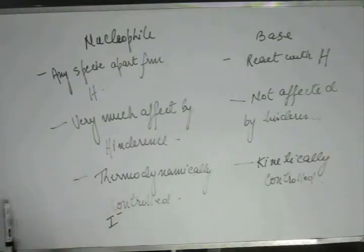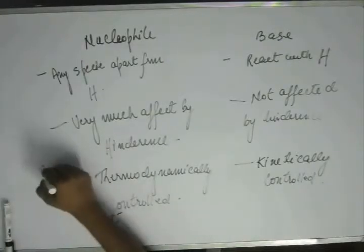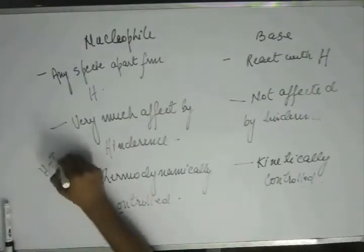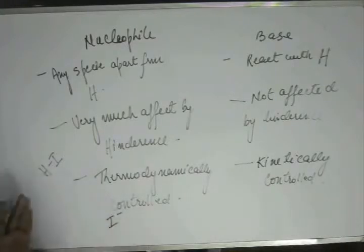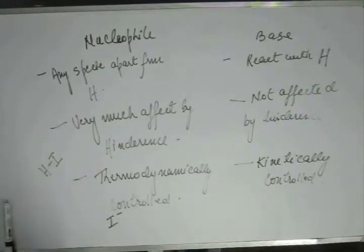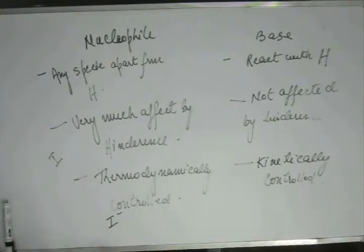That would be the rule of thumb to look at a species and judge whether it will be a nucleophile or a base. HI is a very strong acid — you know HCl is a strong acid, HBr is stronger than HCl, and HI is even stronger than HBr. HI being a strong acid means its conjugate base must be highly stable.